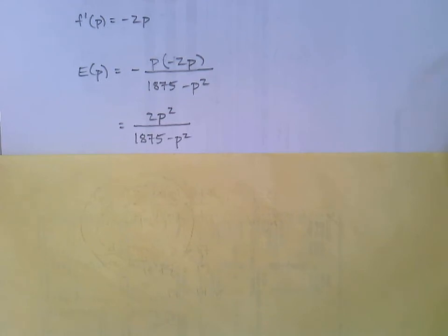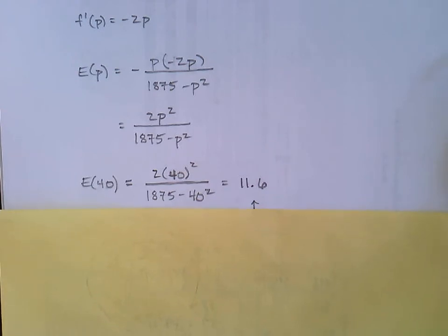Now this question was asking about a price of 40. So let's figure out E of 40. We'll just plug right in. E of 40 equals 2 times 40 squared over 1875 minus 40 squared, and that turns out to be 11.6.